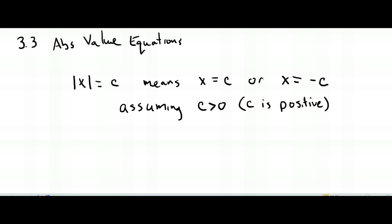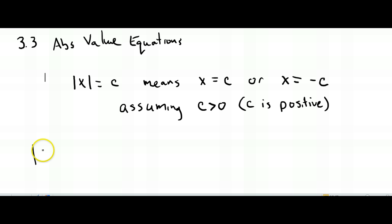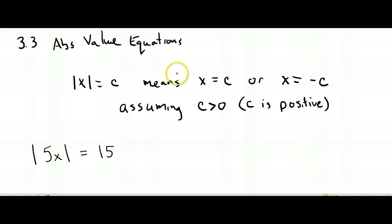What I want you to understand is this is literally a setup. So it means if I have something like 5x in here rather than just x, but it's equal to some number, then look what happens. We take the bars away, and there's one equation.